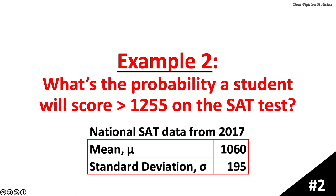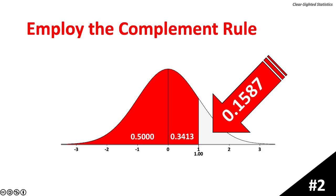Example 2: what is the probability a student will score greater than 1255 on the SAT exam? The answer can be found using the complement rule: 100% minus 84.13% equals 15.87%, or equivalently 50% minus 34.13% equals 15.87%. Our finding: 15.87% of SAT scores are above 1255.